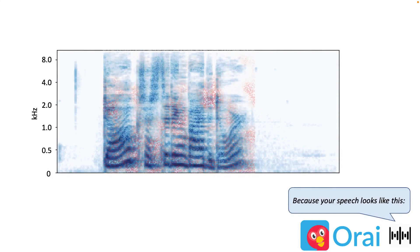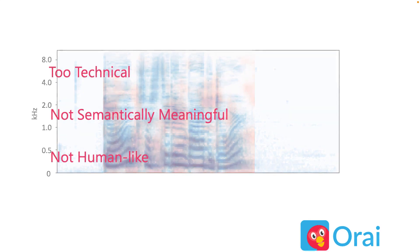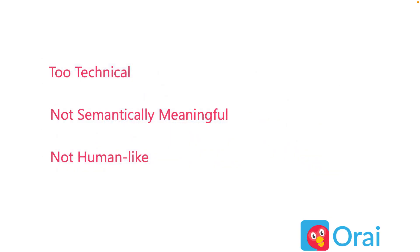Because your speech looks like this, and the highlighted regions reflect fear. In this example, although the saliency map with the spectrogram can faithfully explain the AI's decision, this explanation doesn't make sense for end-users, since the information is too technical to understand and not semantically meaningful, and the way the model thinks is also not human-like. All these problems limit the model's interpretability for various real applications.